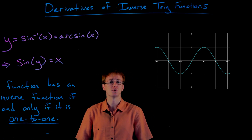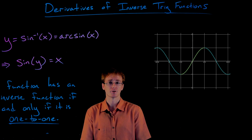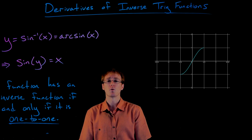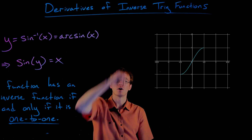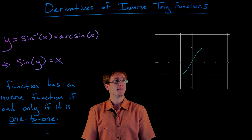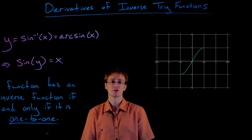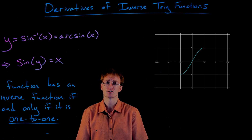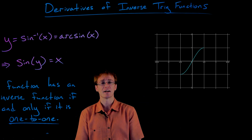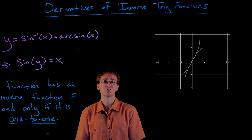For our sine function, we always choose that domain to be on the interval from negative pi over 2 to positive pi over 2. So now if we chop off the piece of our sine function that's outside of this interval, we can see that it is now a one-to-one function — it passes the horizontal line test. And now that we've restricted the domain of our sine function, we can look at its inverse graph. The relationship between a function's graph and its inverse is they're just reflections of each other over the line y equals x. So if we reflect our sine function on that restricted domain, we get the graph of our inverse sine function.